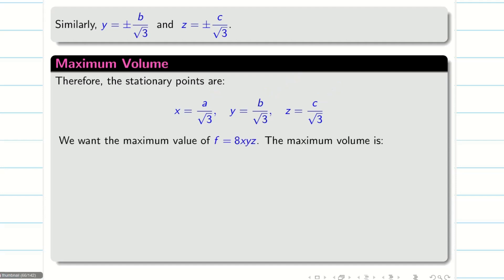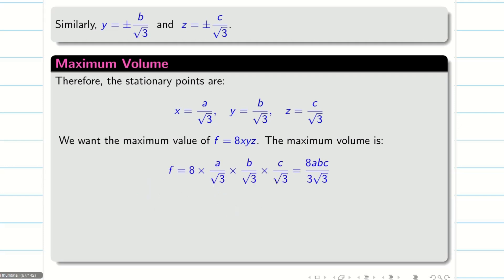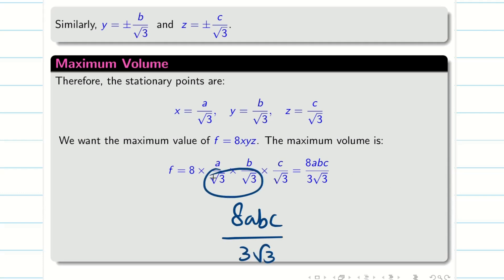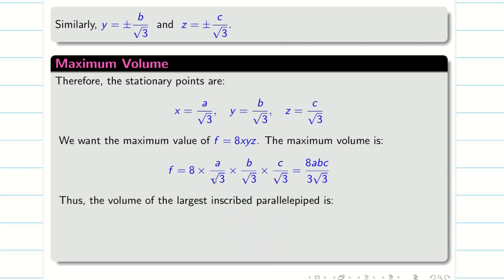Now we substitute the stationary point into f = 8xyz. We get 8 · (a/√3) · (b/√3) · (c/√3) = 8abc / (3√3). Therefore, the volume of the largest rectangular parallelepiped that can be inscribed into an ellipsoid is 8abc / (3√3).